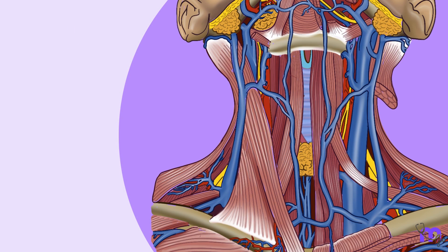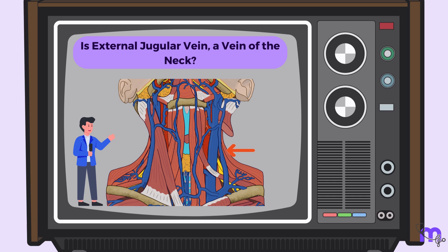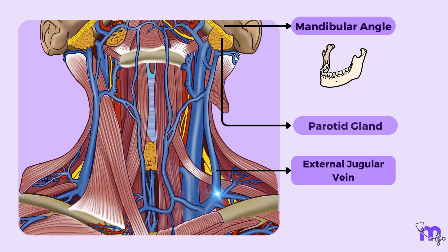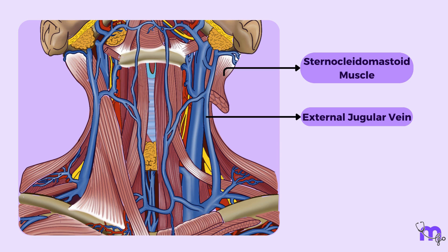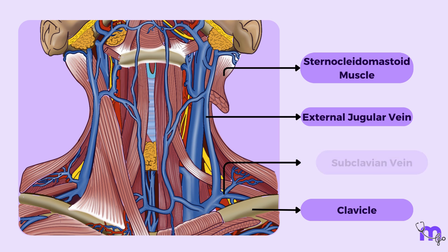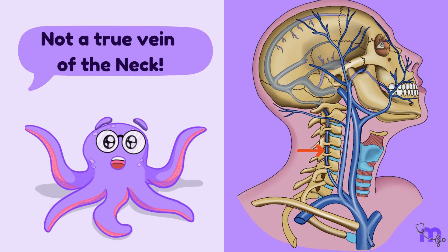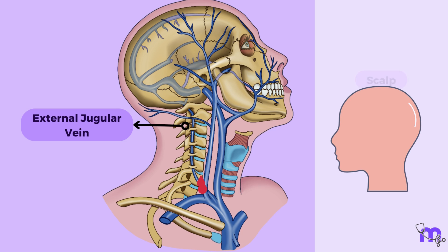Now let us discuss the external jugular vein. But is the external jugular vein a true vein of the neck? The external jugular vein originates around the mandibular angle, slightly below or within the parotid gland. It then follows a slanting path down the neck, positioned on top of the sternocleidomastoid muscle. As it reaches the clavicle, it passes through the deep cervical fascia and empties into the subclavian vein. It is not a true vein of the neck, because the primary purpose of the external jugular vein is to facilitate drainage from the superficial areas of only the head, specifically the scalp and face.